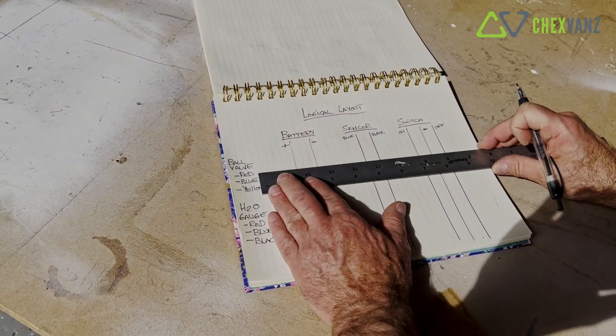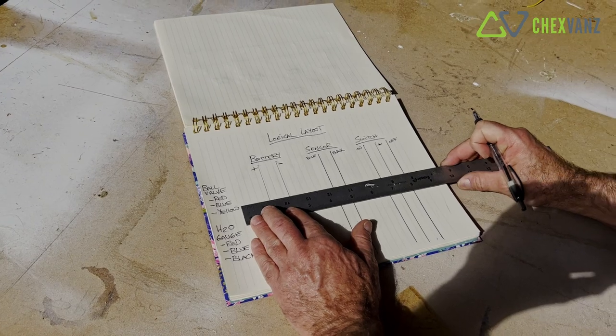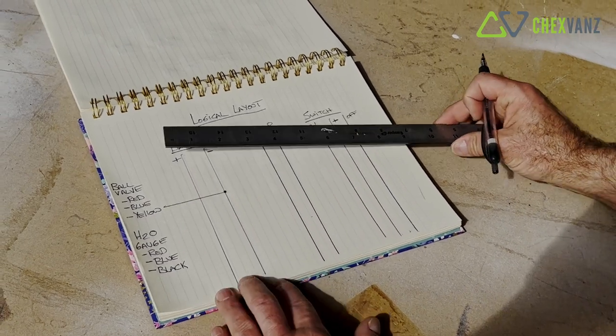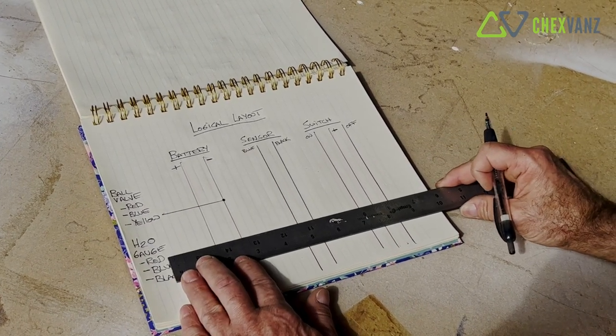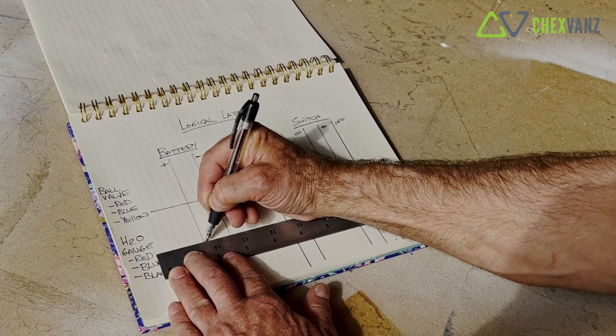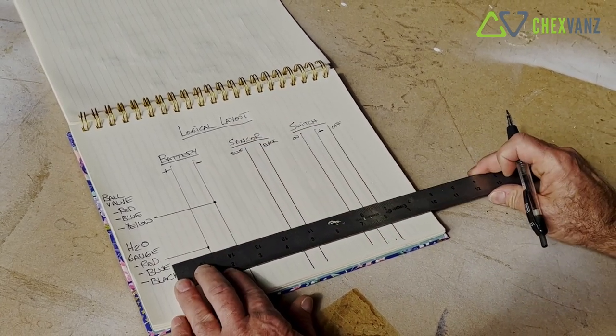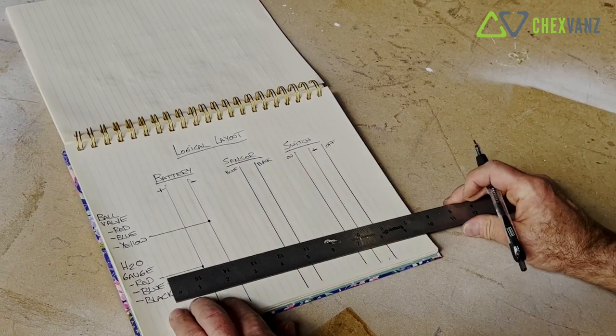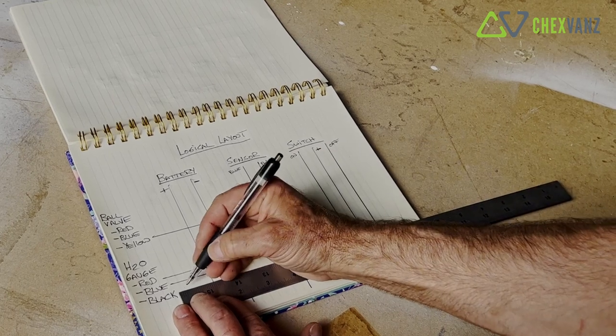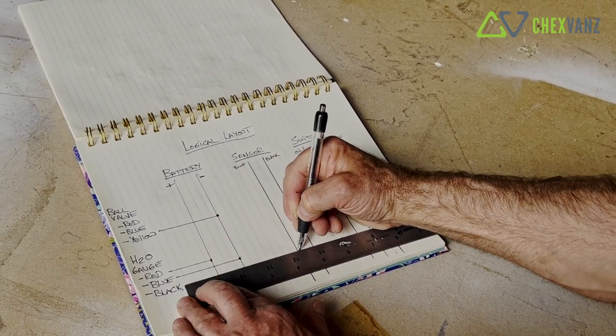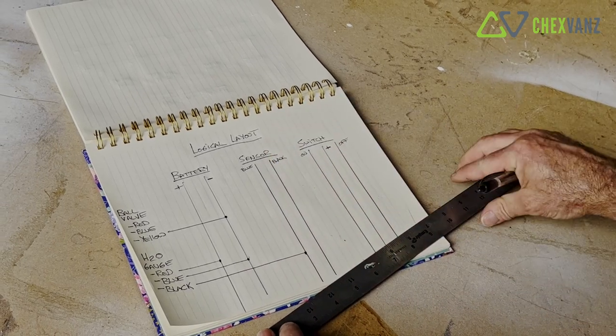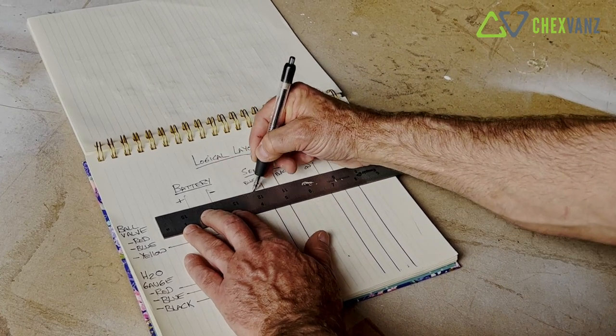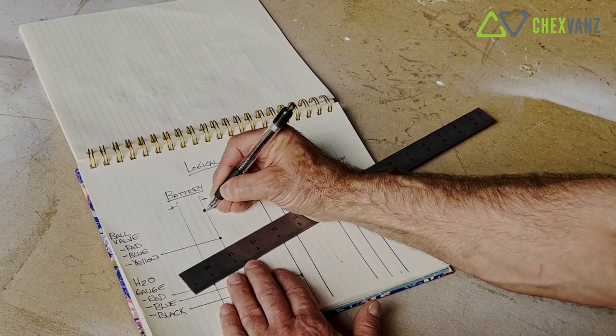All right. So let's figure out now how to make these connections happen. On the ball valve, the yellow connection will run to ground and we'll make a connection into ground. On the water gauge, the red will run to positive power. The blue will run to negative power. And the black will run to our fuel sending unit and connect to blue. The sensor's black cable simply needs a ground. So we'll run the sensor's black cable and make a connection to ground.